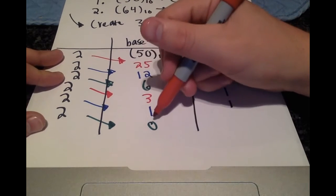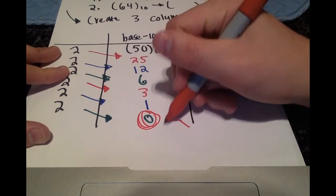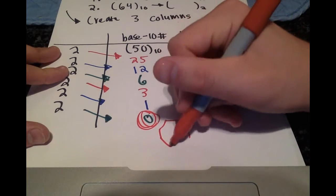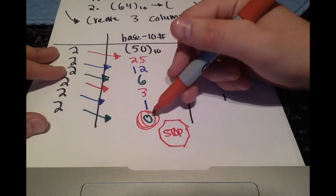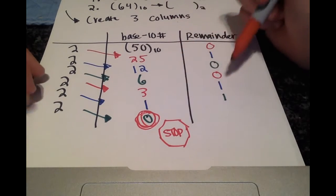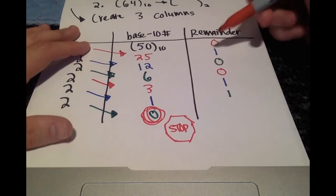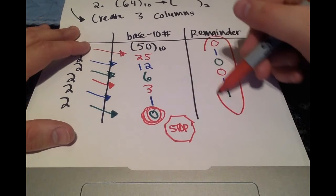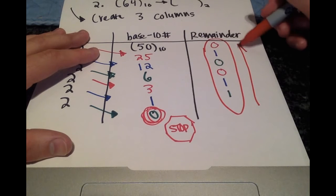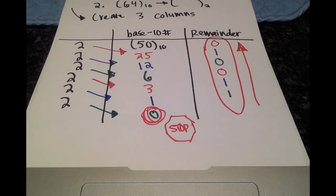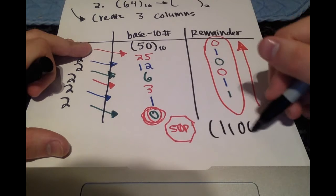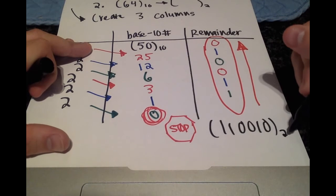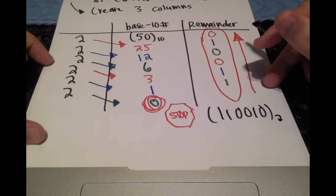Lastly, 2 goes into 1 zero times with a remainder of 1. You stop as soon as you reach 0 — that is our indication to stop, that's a stop sign. As soon as you reach 0 you are done dividing by 2. What you're going to want to do is circle this column of vertical numbers and rewrite the numbers backwards.